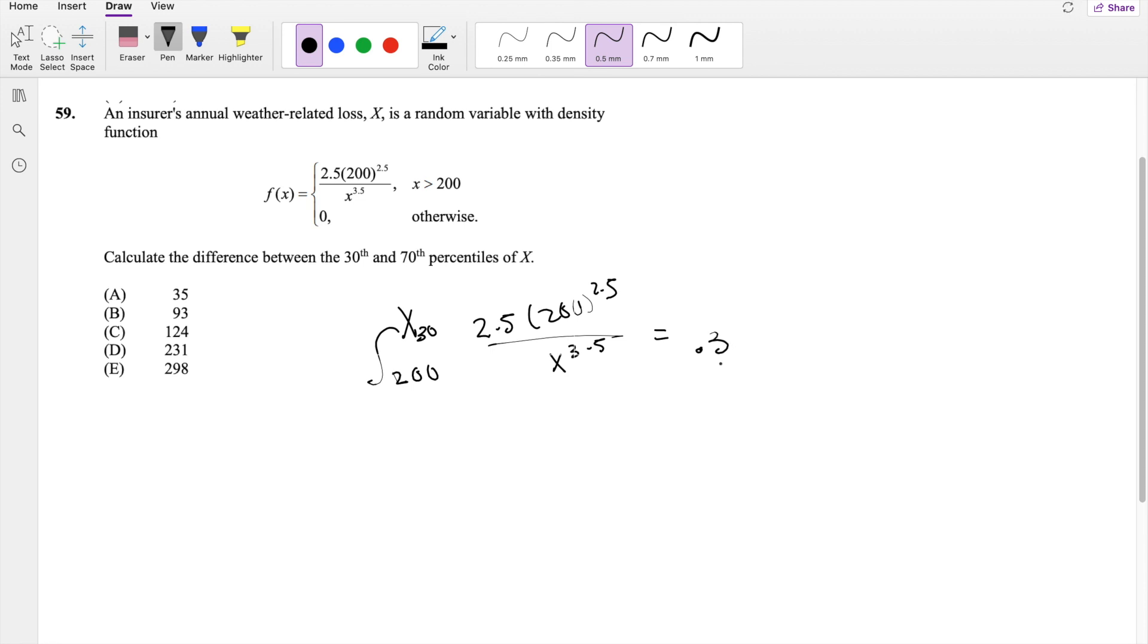So then all we have to do is take the antiderivative of this. So when we take the derivative, this becomes 2.5, 200 to the 2.5 is just a constant. But right here, this is technically the same thing as X to the negative 3.5. So taking the antiderivative, we add 1, so that's X to the negative 2.5. And we divide by the constant, so that's negative 2.5.